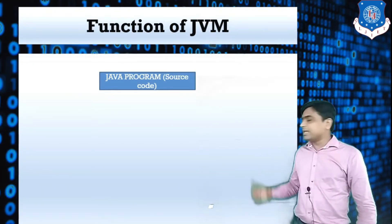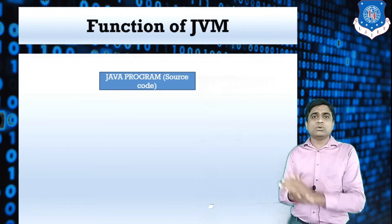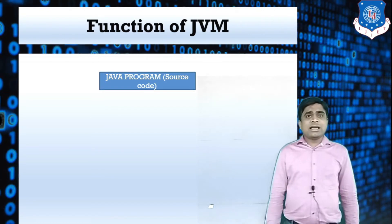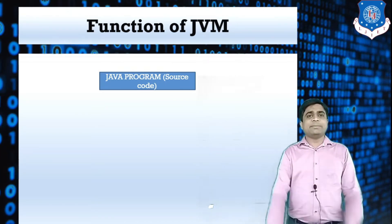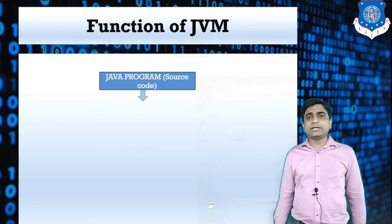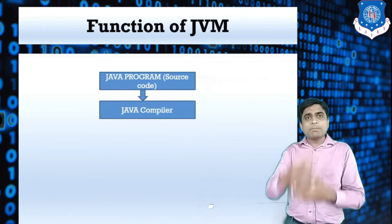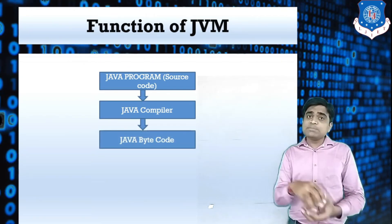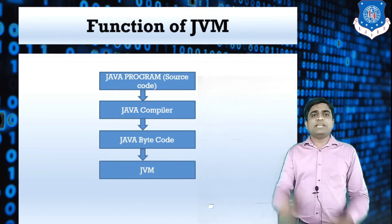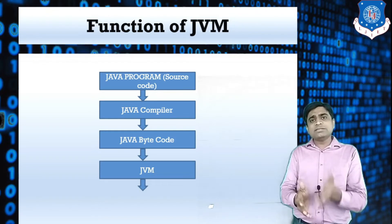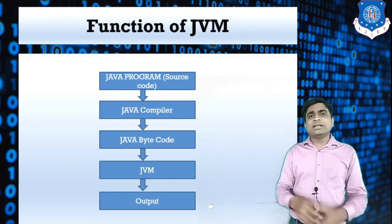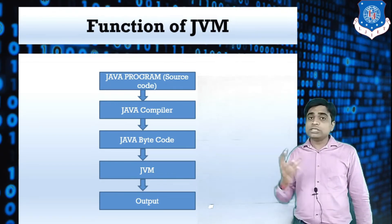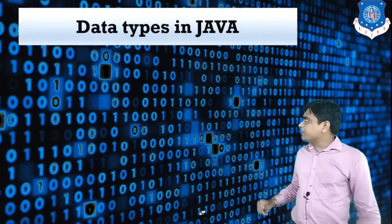The function of JVM — as I explained in my last lecture — is how the high-level code of Java is converted into output. Java uses both a compiler and an interpreter. First, the high-level program is compiled and converted into bytecode — that is the role of the compiler. Then this bytecode becomes input to the JVM, and finally JVM produces the output.